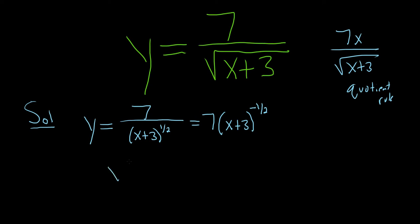Okay, now let's take the derivative. So y prime. We're going to use the chain rule. So we'll bring down the negative 1 half, so that'll give us negative 7 halves, because we multiply it by the 7.